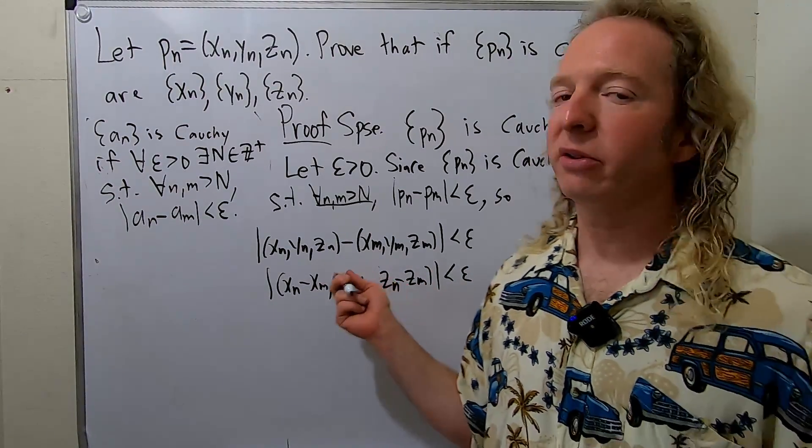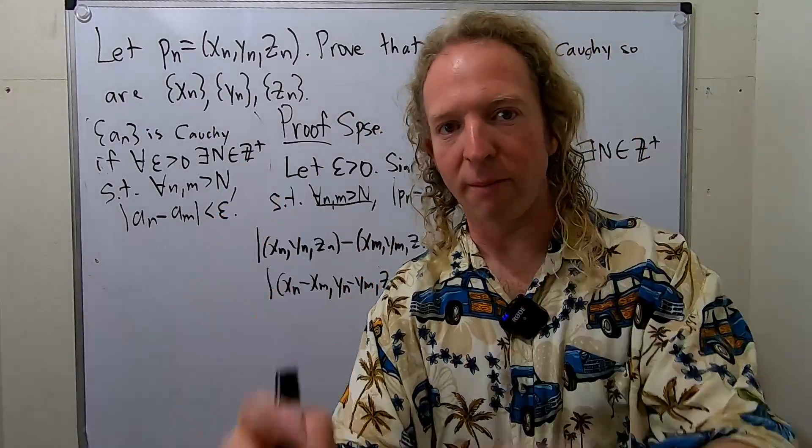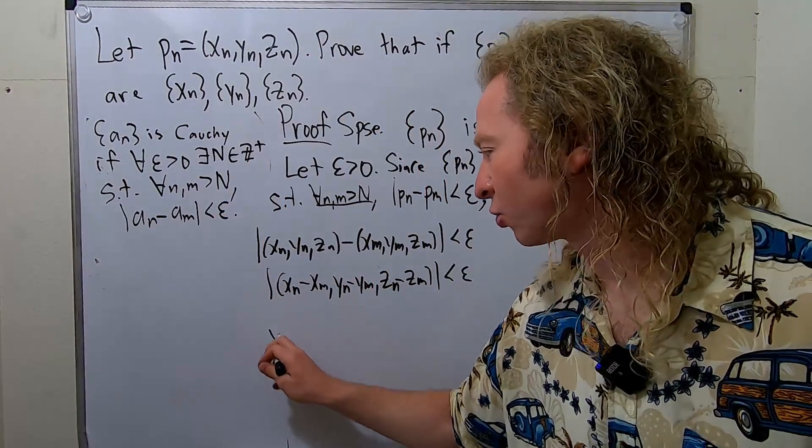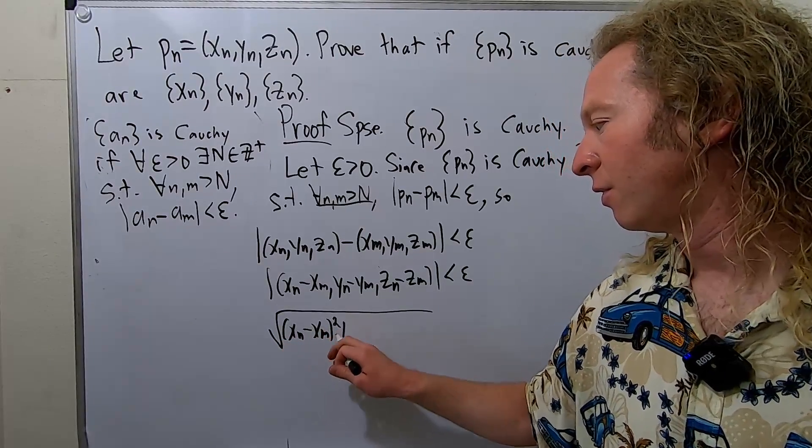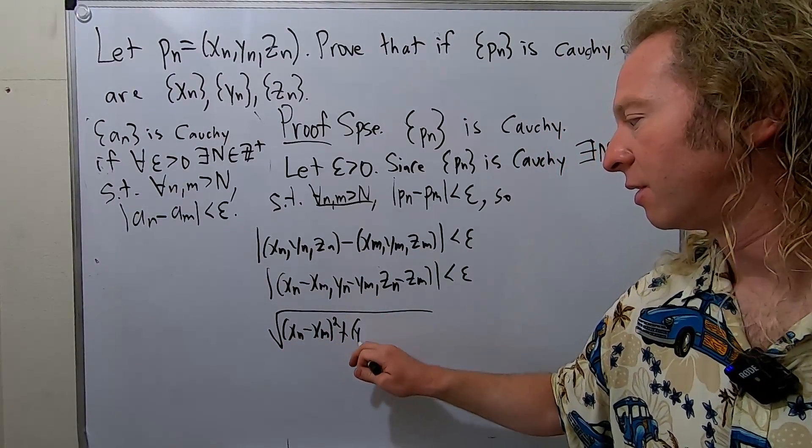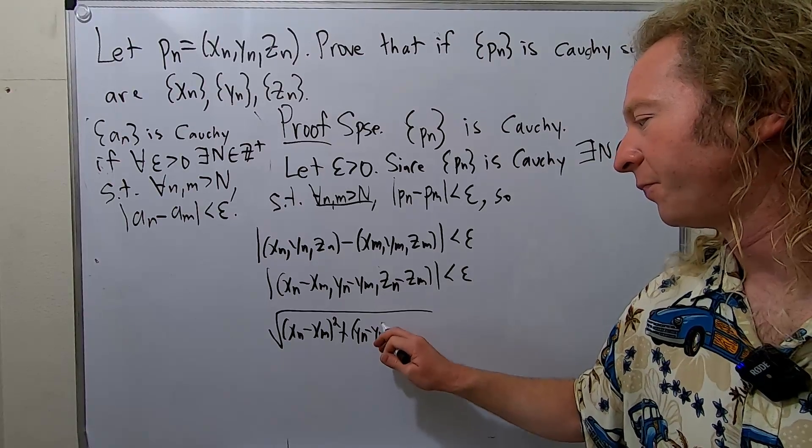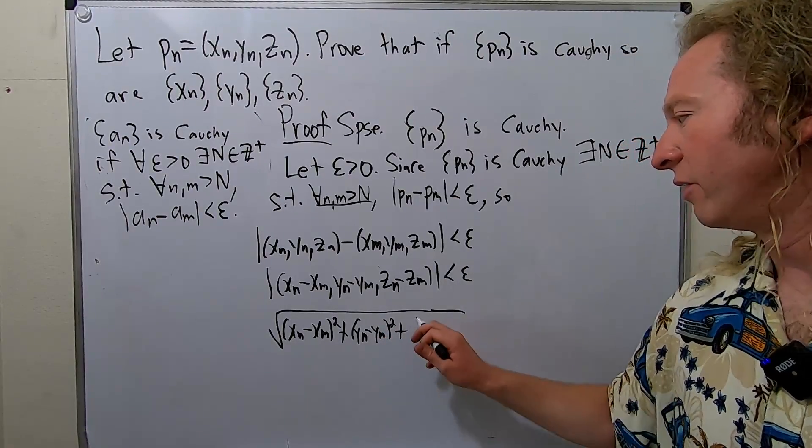Now we're going to invoke the definition of the norm. Right, so let's do it. This is the square root. And then you square this. You square this. Going kind of fast, long proof. And then you square this.